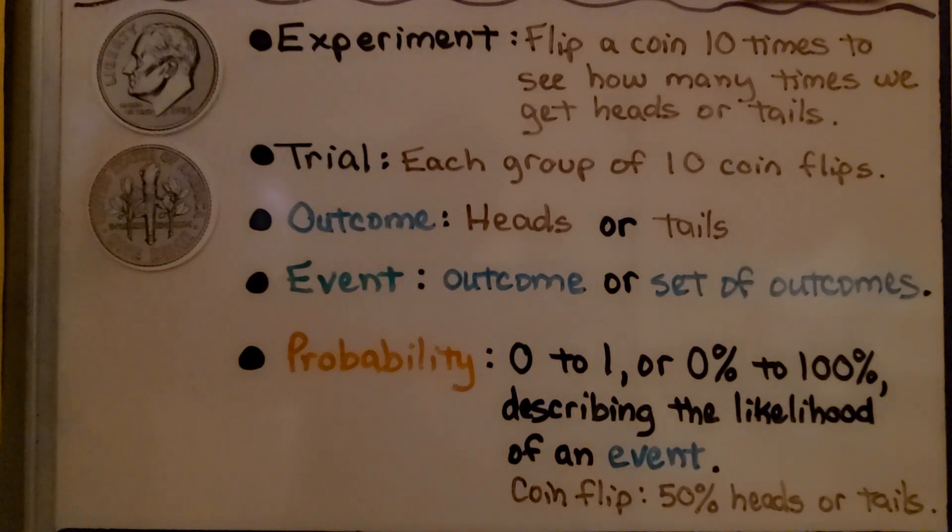An experiment, that would be flipping a coin ten times to see how many times we get heads or tails. The trial would be each group of ten coin flips. So we could do two trials, flip it 20 times, three trials, flip it 30 times.